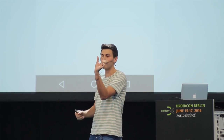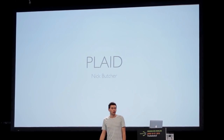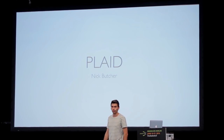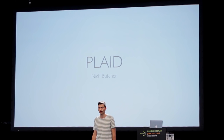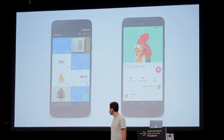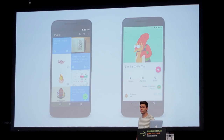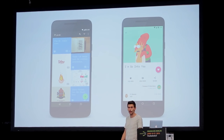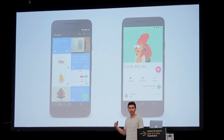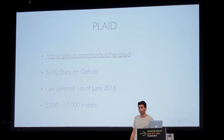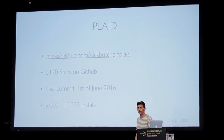Now let's start with Plat. Plat was built by Nick Butcher, a Google Android Developer Advocate. The main idea of this app is you have a list of design inspirational sources like Dribbble and Designer News. It fetches over HTTP and displays items in a list. It has over 5,000 stars on GitHub and is still under development.